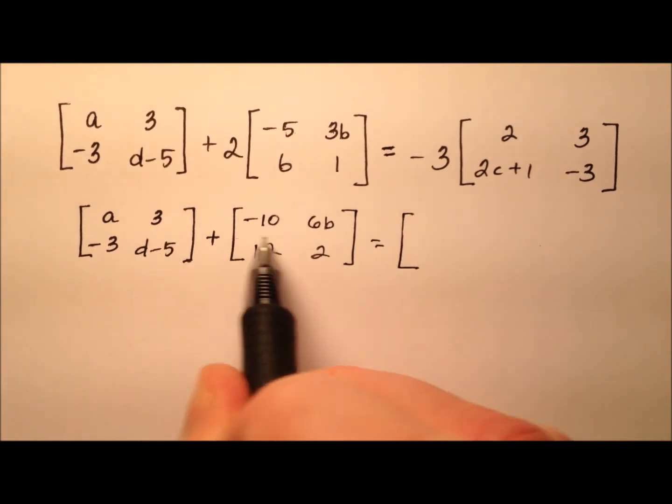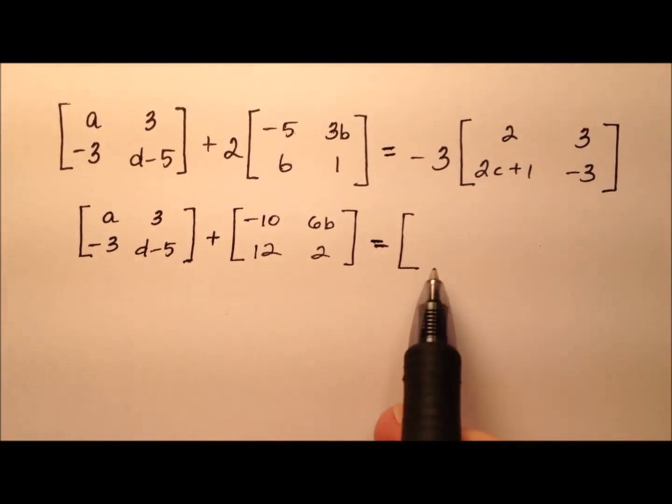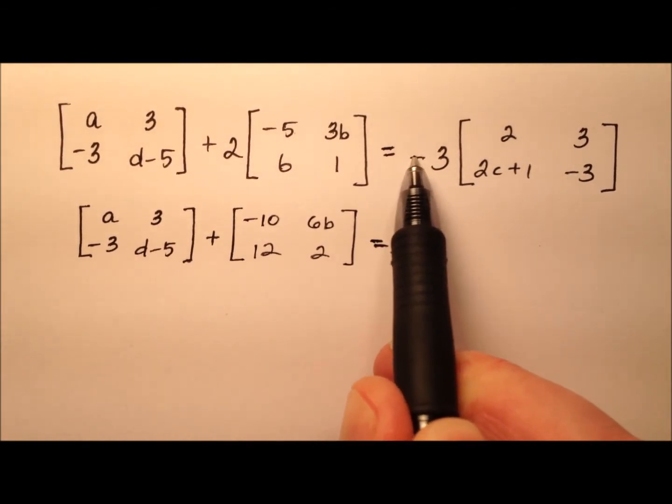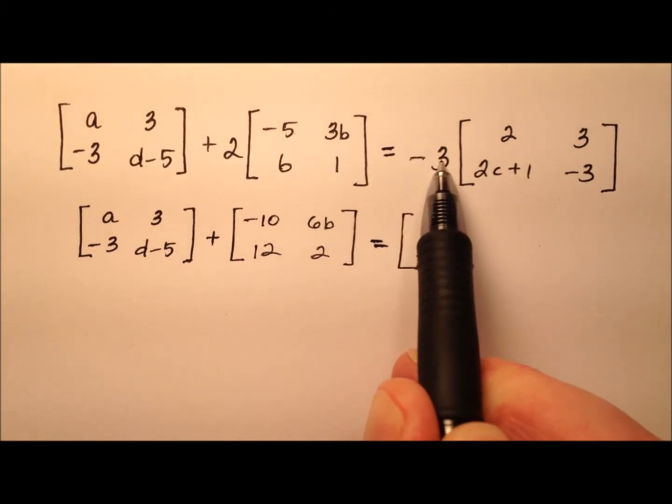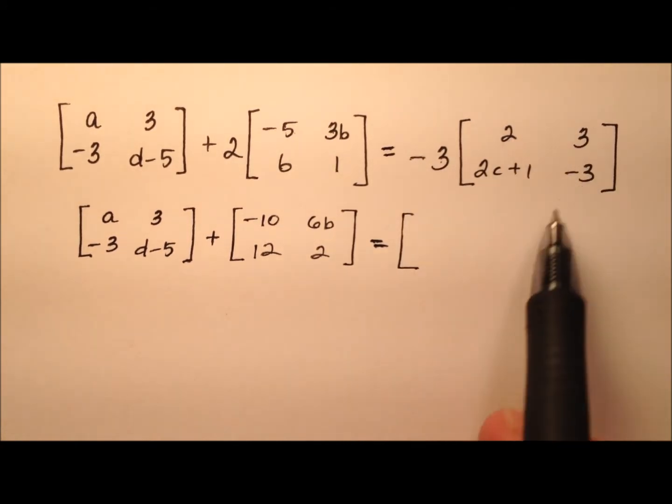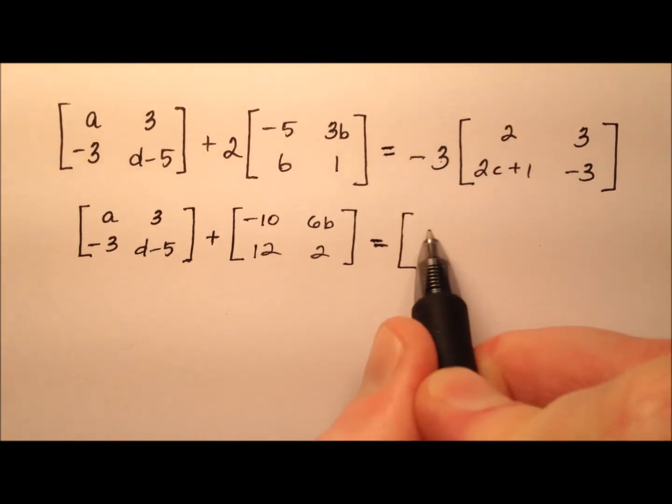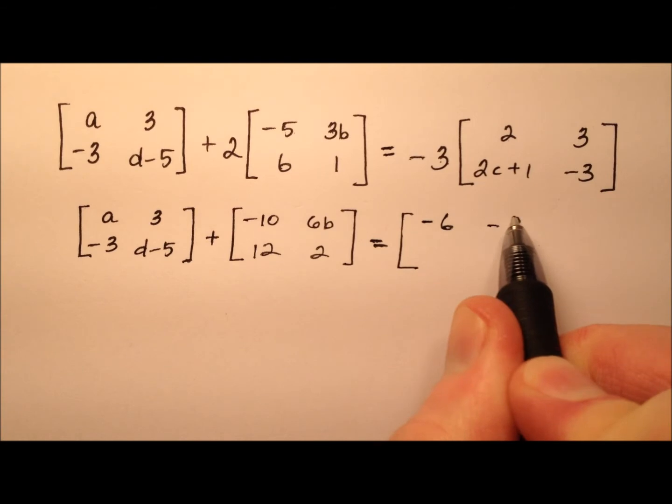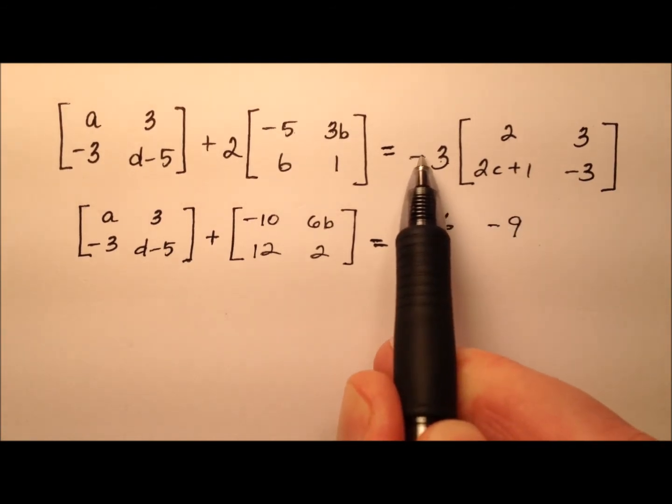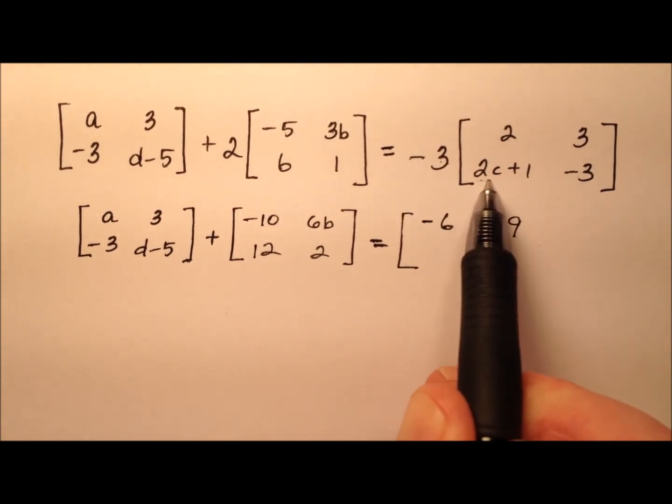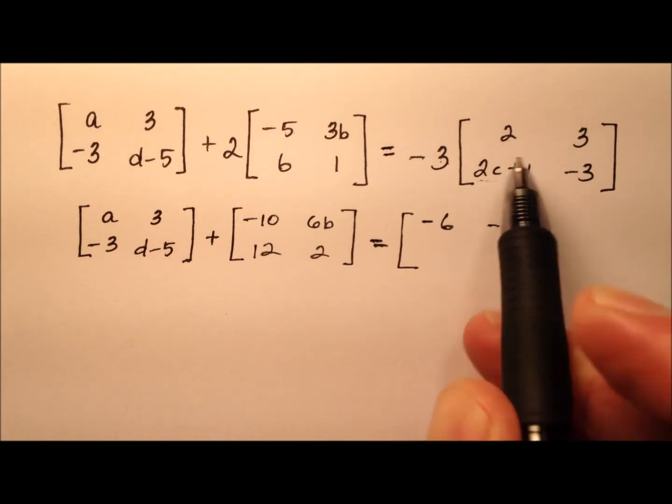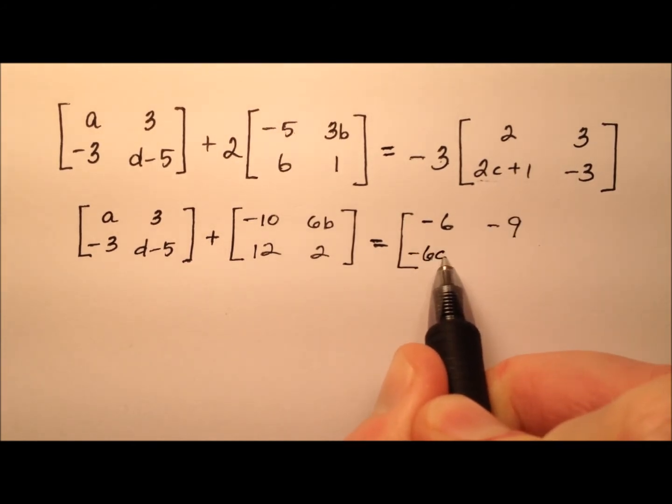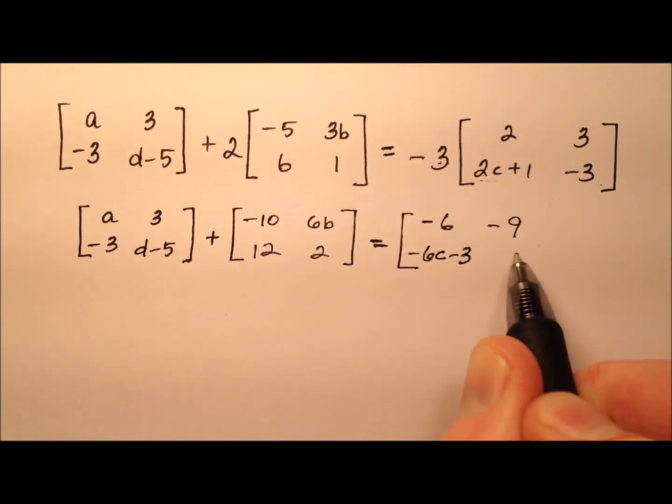And adding these two matrices together will give us, and we're going to take this scalar multiplication by negative 3, and do the same thing, just distribute it through to these entries. So negative 3 times 2 is negative 6, negative 3 times 3 is negative 9. Distributing this negative 3 across both the 2C and the positive 1 will give us negative 6C minus 3, and then negative 3 times negative 3 will be positive 9.